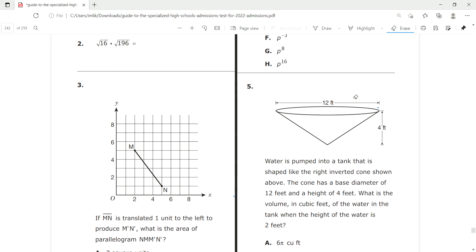Alright, so we have this problem: water is pumped into a tank that is shaped like the right inverted cone shown above. The cone has a base diameter of 12 feet and a height of 4 feet. What is the volume in cubic feet of the water in the tank if the height of the water is 2 feet?